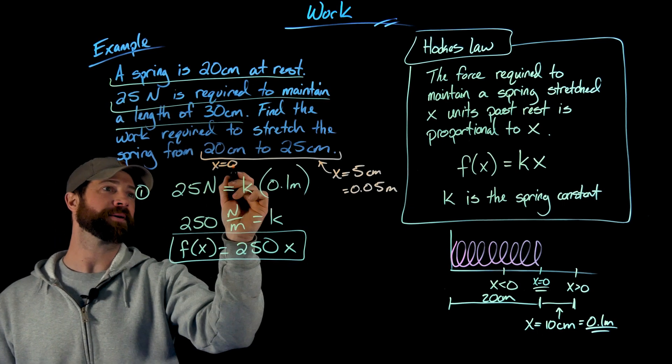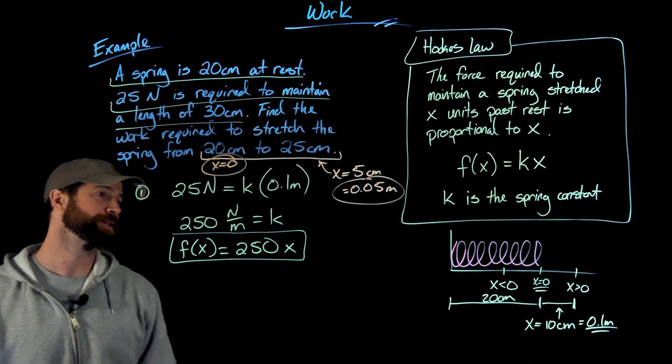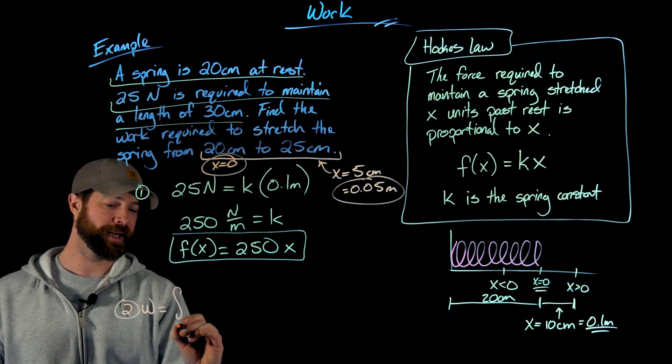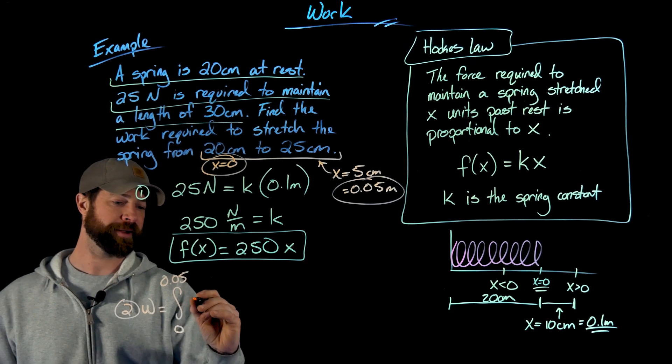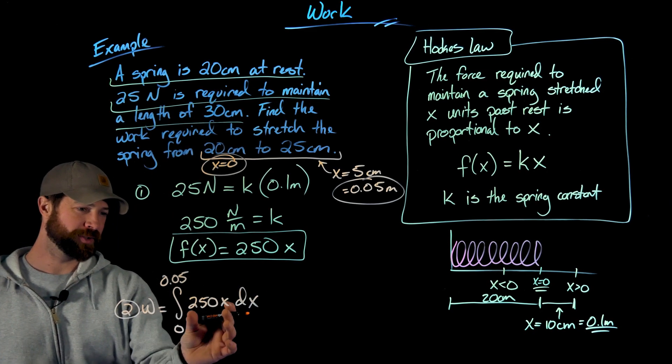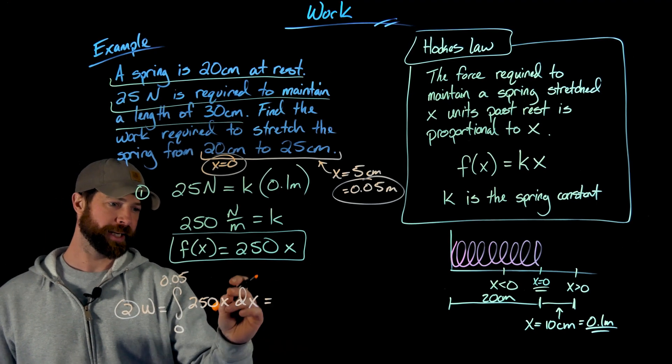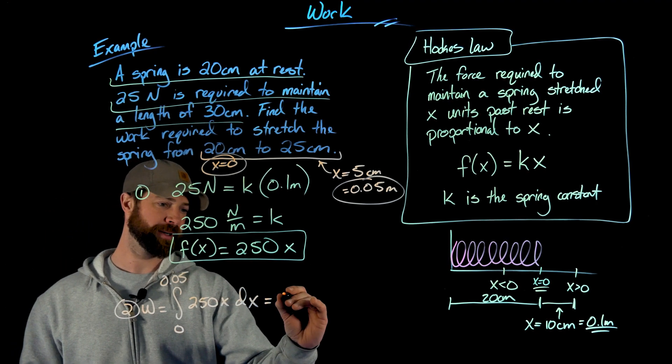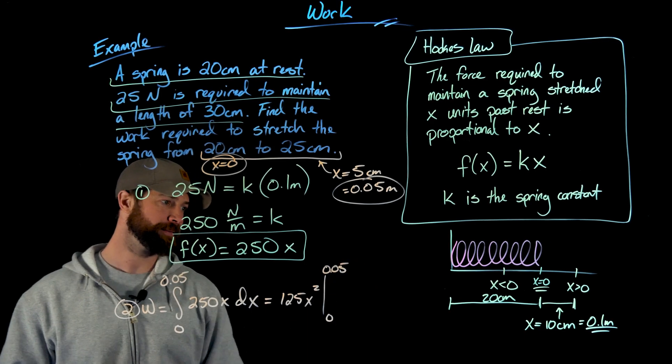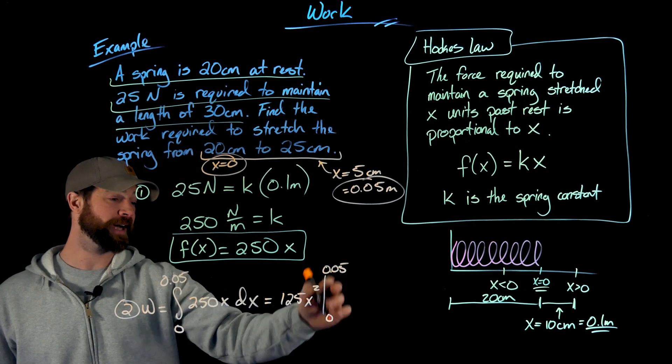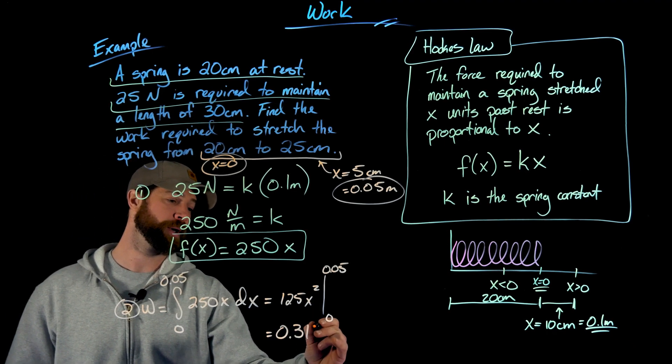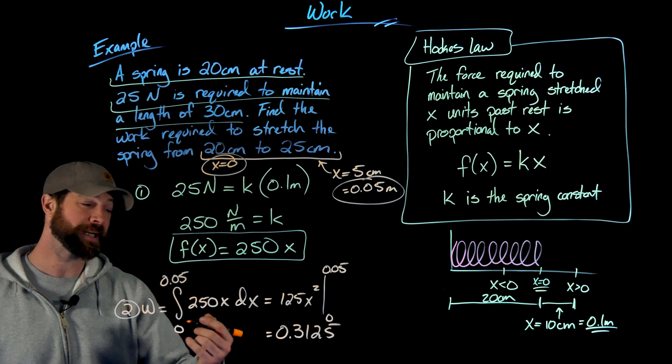So there we have it. We got our force function. We have our bounds from 0 to 0.05 meters. And so to find the work, all we need to do is integrate from 0 to 0.05. Here's my force function, 250x dx. And this is really straightforward, just the anti-power rule. I get x squared divided by 2. So this becomes 125x squared. We're evaluating from 0 to 0.05. And then plug in 0.05, because the 0 does nothing here. I get 5/16 or 0.3125. And these are newton meters or joules.